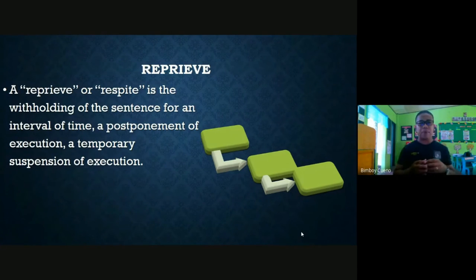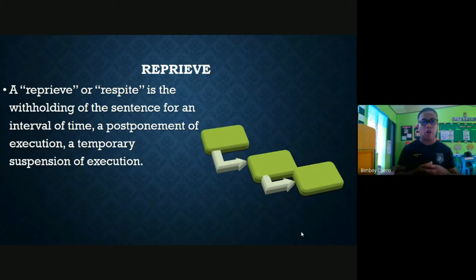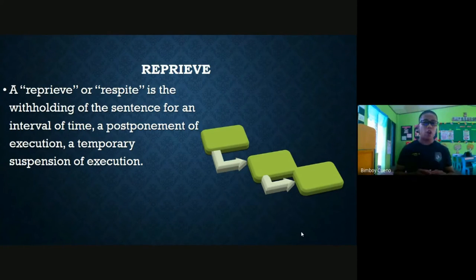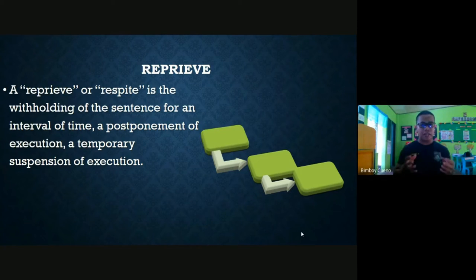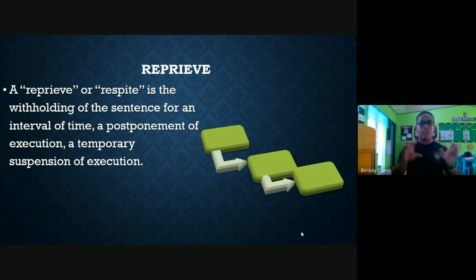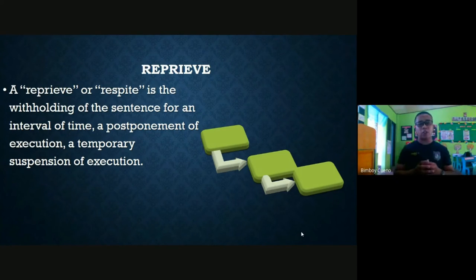Reprieve, or respite, is the withholding of a sentence for an interval of time — a postponement or temporary suspension of execution. Under Republic Act 7659, the Death Penalty Law, once a person is found guilty beyond reasonable doubt and the trial court renders a verdict of capital punishment, the case is automatically put into reprieve, meaning the punishment is temporarily suspended while it is reviewed by the Supreme Court.